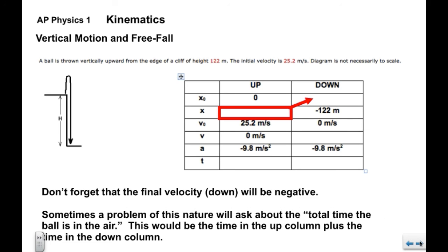So now we're going to have enough to do the down column. And don't forget once again that the final velocity will certainly be negative because it's again just as it lands. The problem of this type might ask you something about the total time of flight or the total time that the ball is in the air. This would be the time in the up column plus the time in the down column. These would be the total time that the ball is in the air. Alright, that'll do it for vertical motion and free fall.